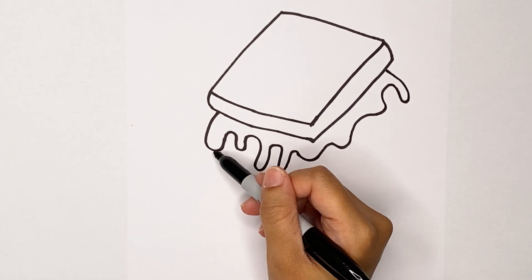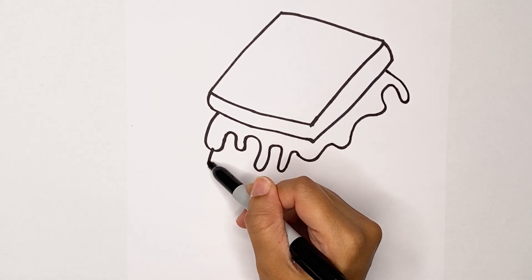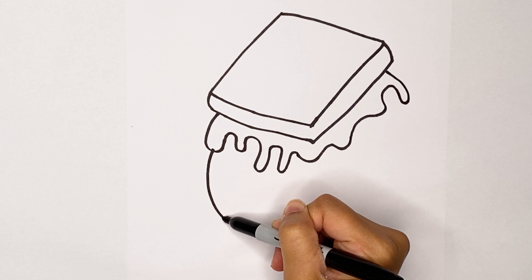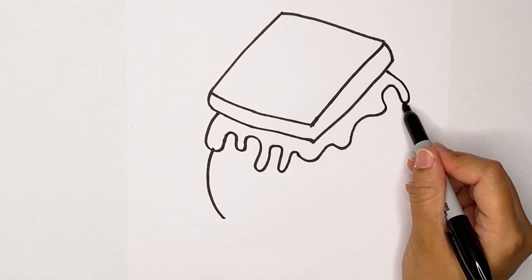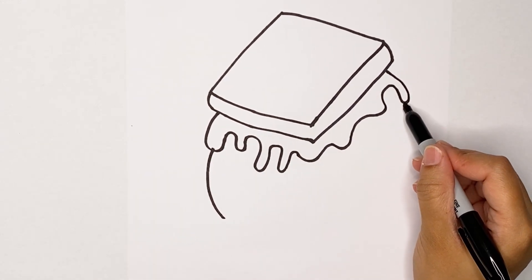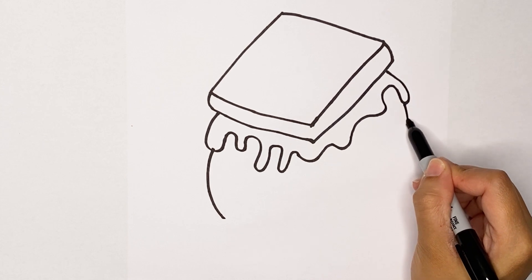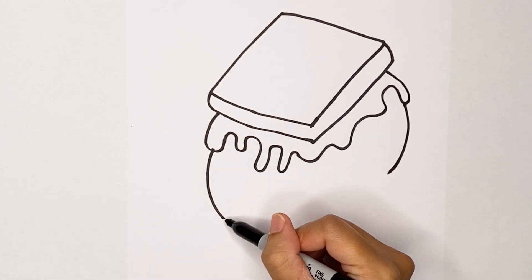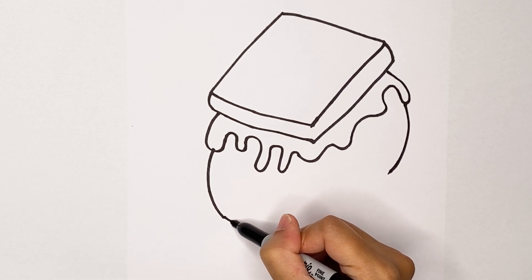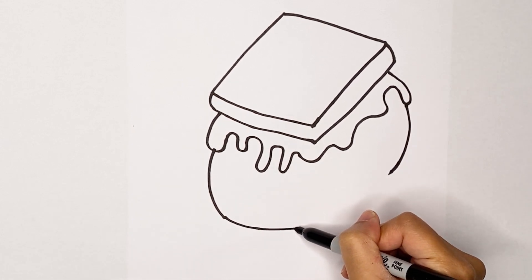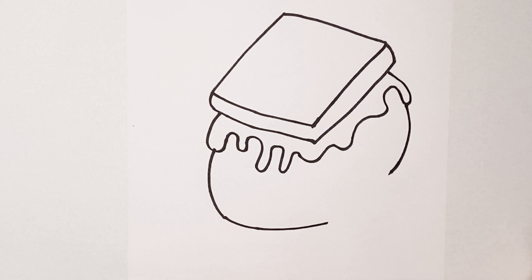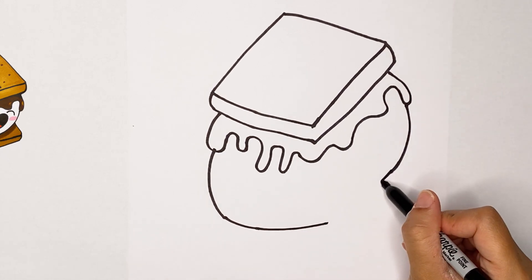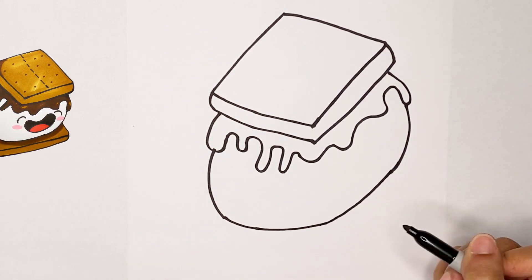Now let's make that big marshmallow. So draw a curve out like that, and then same thing on the other side. Start at one of your drips and then draw a curve out again. Now we're going to draw a curved line that goes out. Same thing, curve and connect it.